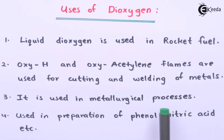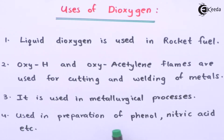It is used in the metallurgical process so as to remove impurities. And it is also used in the preparation of phenol, nitric acid, carboxylic acid, and so on. So therefore these are the uses of dioxygen that I have discussed here.